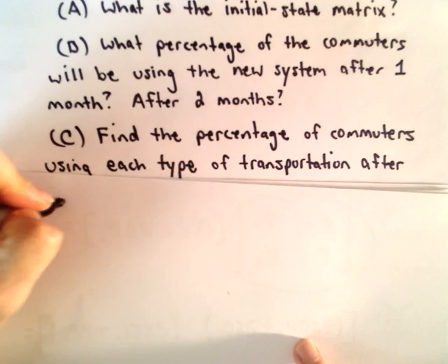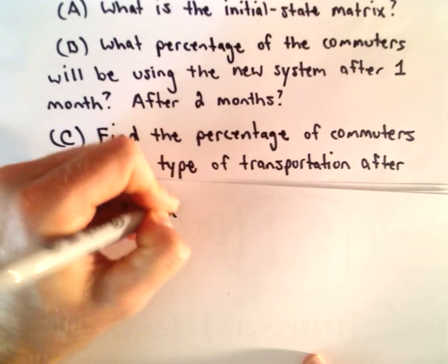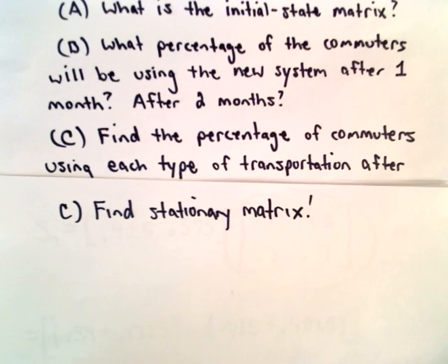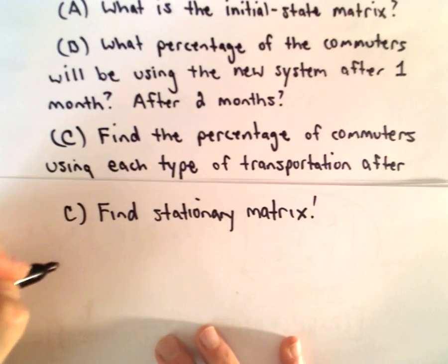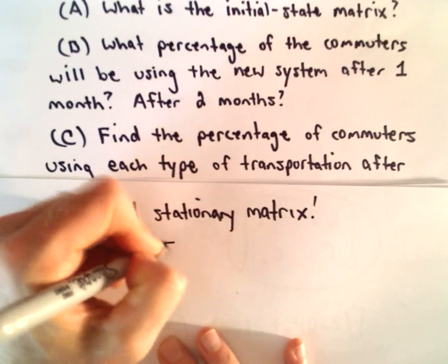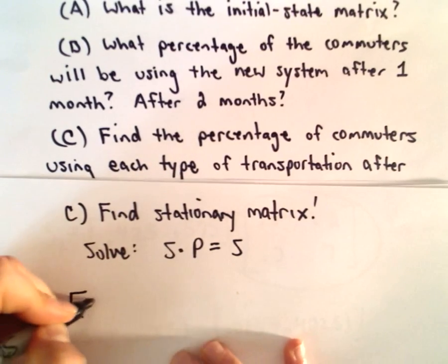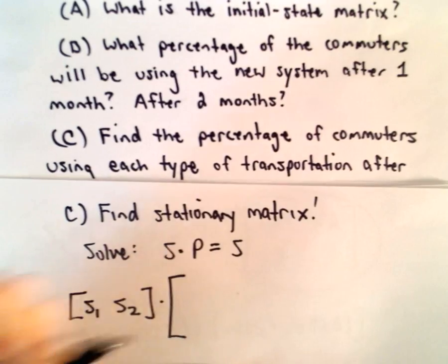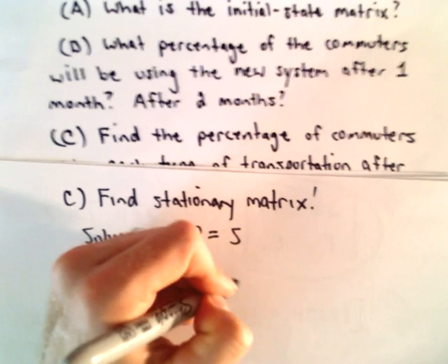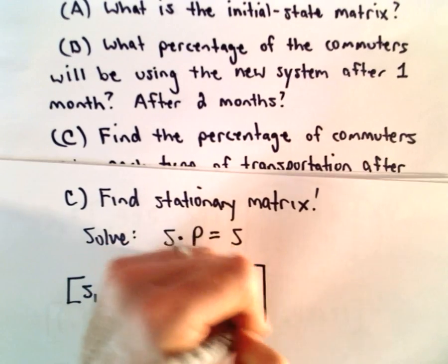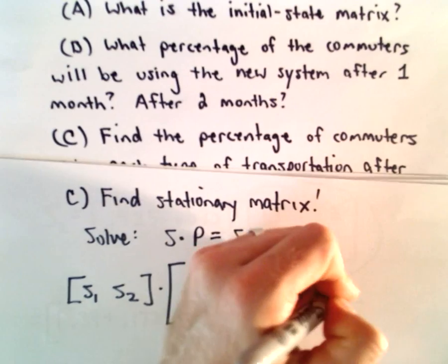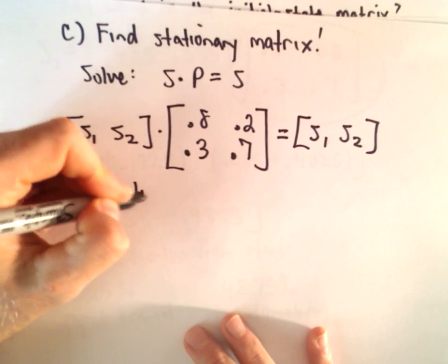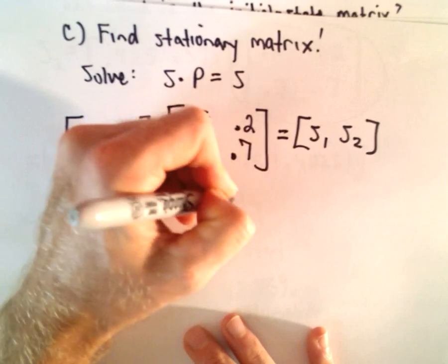Now we're going to answer Part C. We're going to find that stationary matrix, finding the percentage using each type of transportation in the long run. We're going to use the same technique from the other video, so we have to solve the equation S times P equals S. We've got S1 and S2, multiply that by our transition matrix with entries 0.8, 0.2, 0.3, 0.7, and that equals S1 and S2. From this we're going to create a system of equations and solve it.